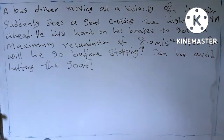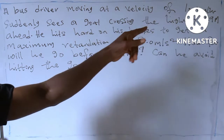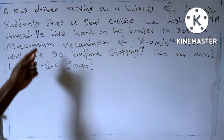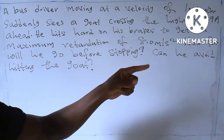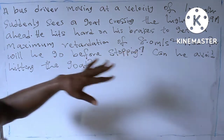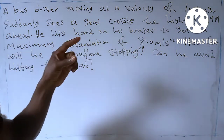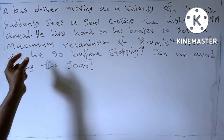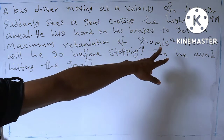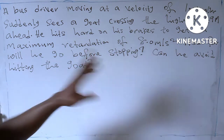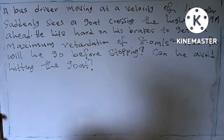Let's do this calculation. A bus driver moving at a velocity of 100 kilometers per hour suddenly sees a goat crossing the highway 49 meters ahead. He hits hard on his brakes to get a maximum retardation of 8.0 meters per second squared. How far will he go before stopping? Can he avoid hitting the goat?